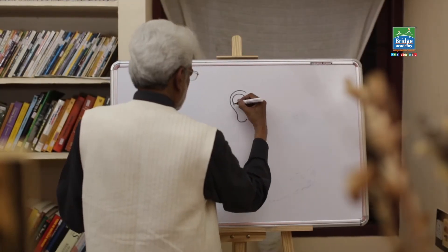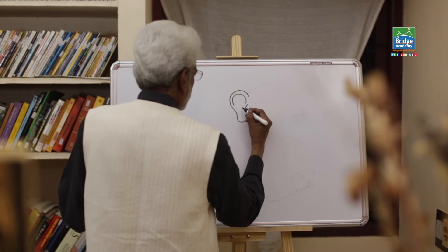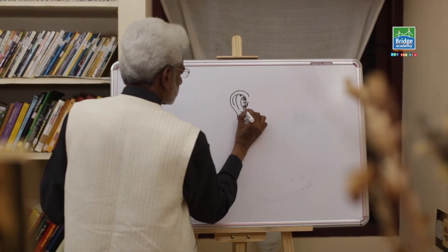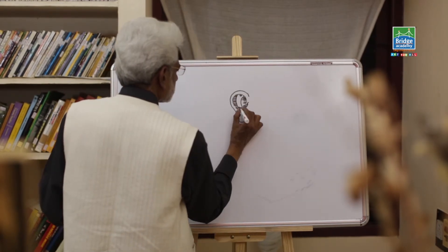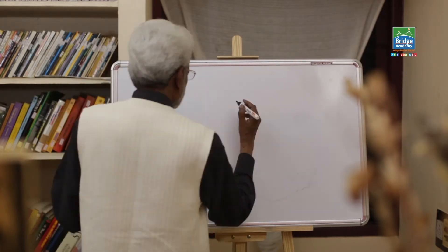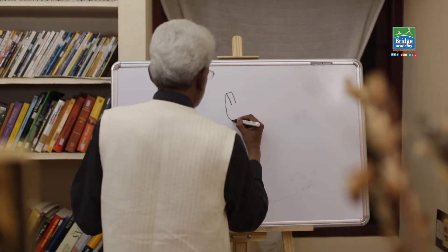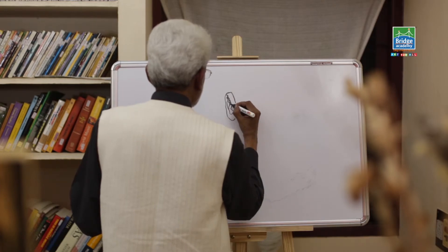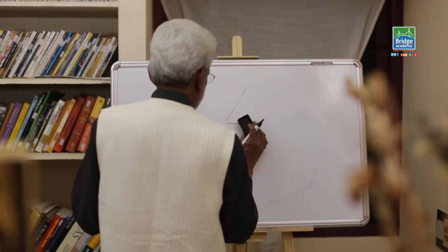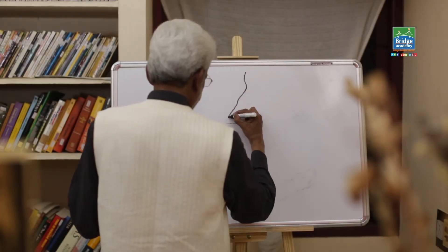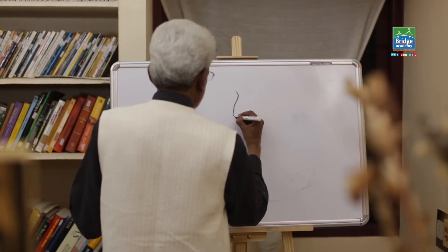The ear on the side view is a C and another C hanging from the bottom, and we draw the ridges. This is the front view for the ear. This is the profile for the nose and a three-quarter view.